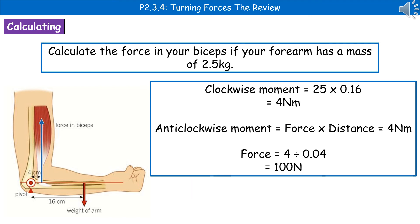Finally, we calculate the moments. The clockwise moment is 25 newtons times 0.16 m, which gives us 4 newton metres. By the principle of moments, the anticlockwise moment must also equal 4 newton metres. Since that's force times distance, and the distance is 0.04 m, the force equals 4 divided by 0.04, which is 100 newtons.